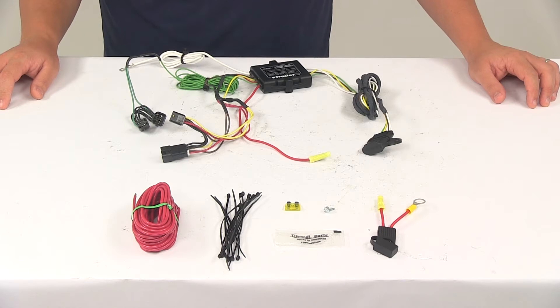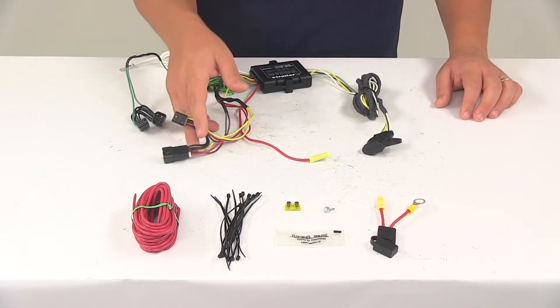Now the unit is designed to connect quickly and easily. You don't have to worry about cutting or splicing any wires. Just locate the connection points in the rear cargo area according to the included instructions and then plug in your connectors.